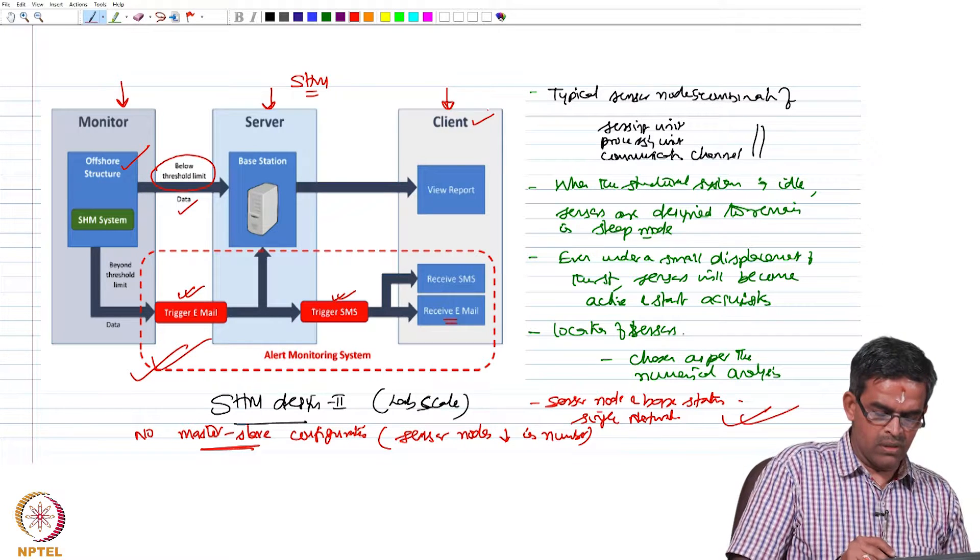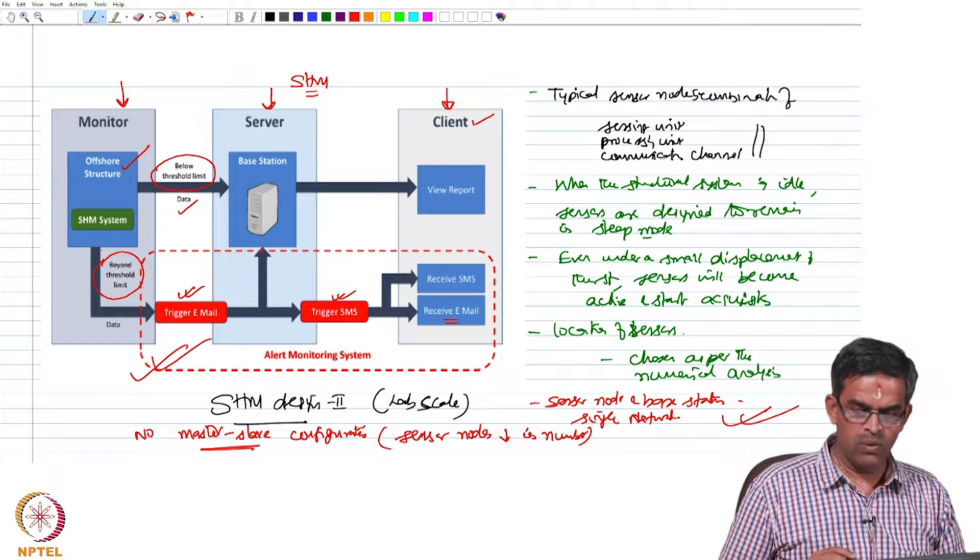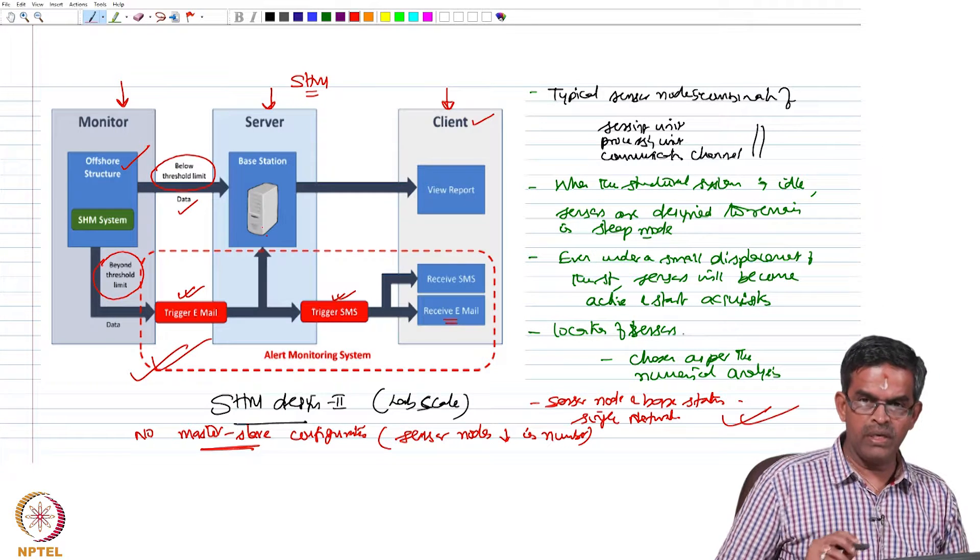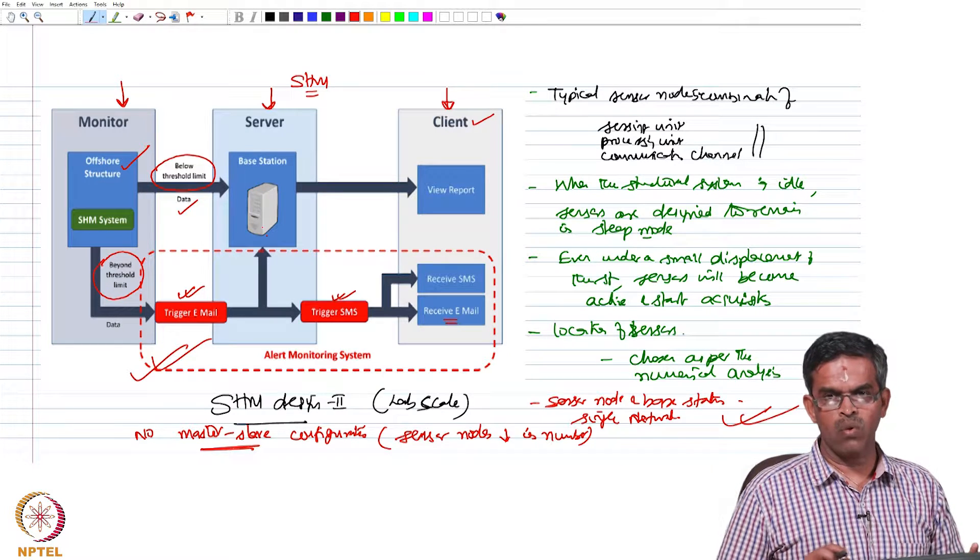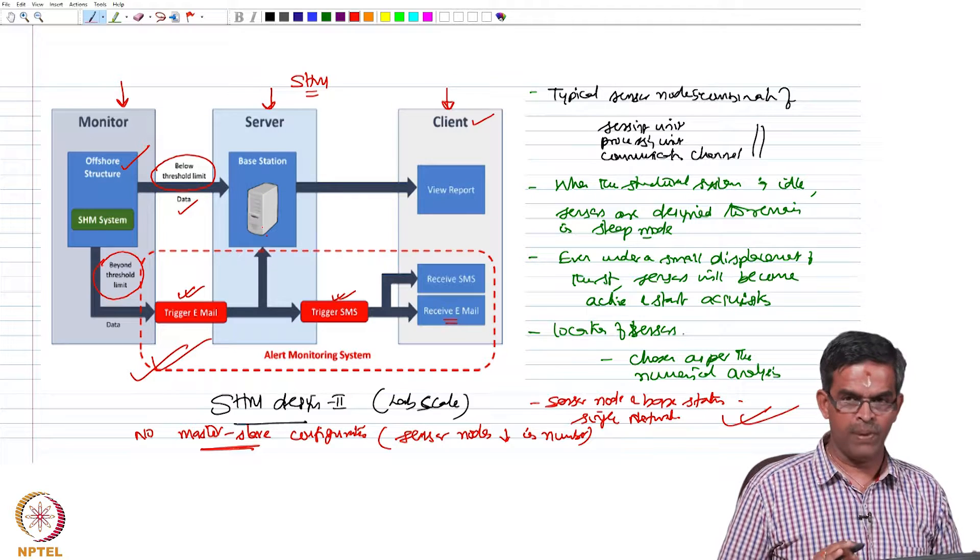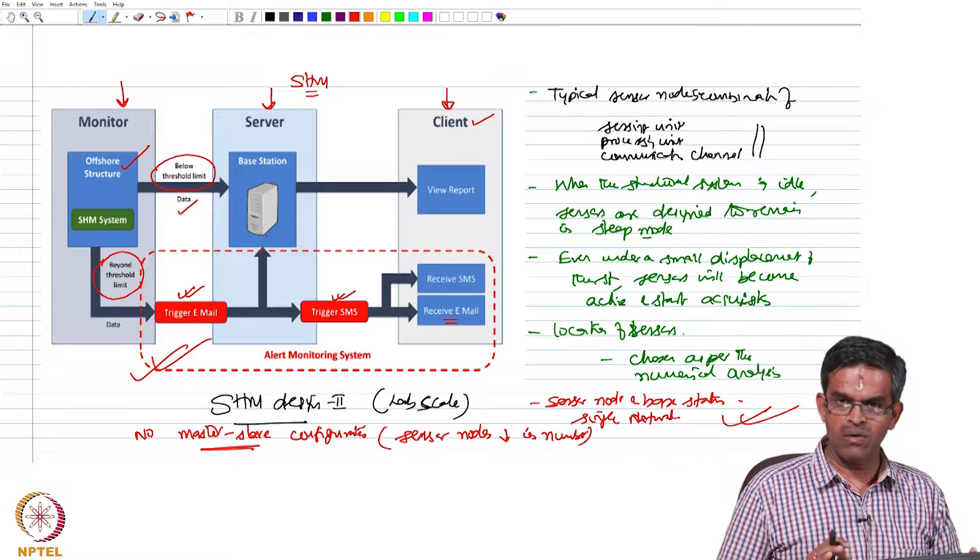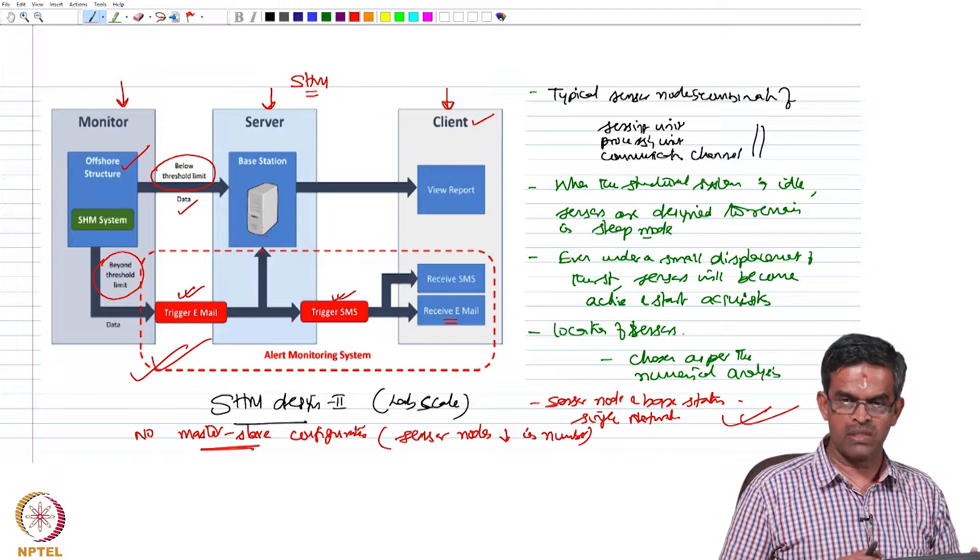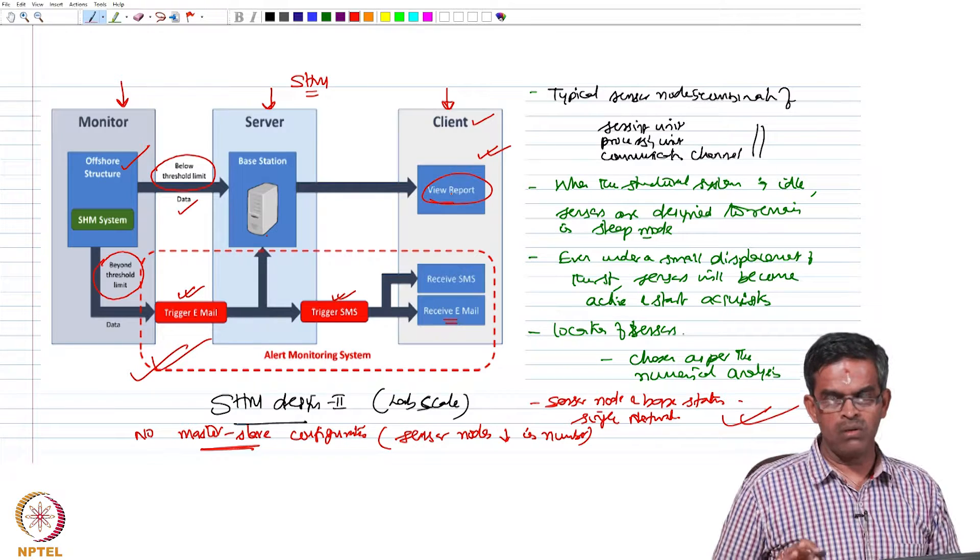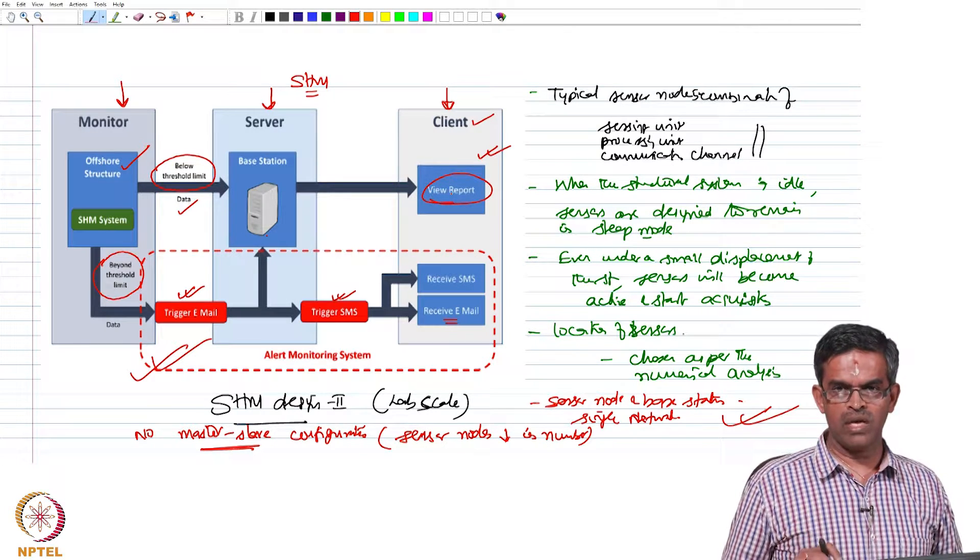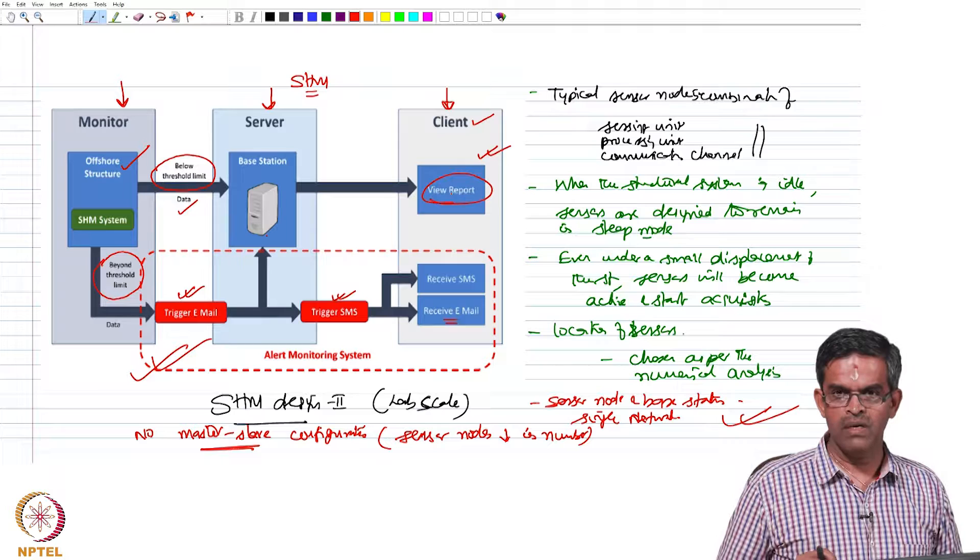The comparison of the acquired response with the threshold value is then communicated to the base station to indicate at what time frame, at what sensor, at what location on the structure this exceedance happened. There is a physical mapping of the exceeded data with that of the threshold value onto the real-time structure, so that the client server person looking at the report will know at what location in the structure the exceedance of the value has happened and at what time frame.